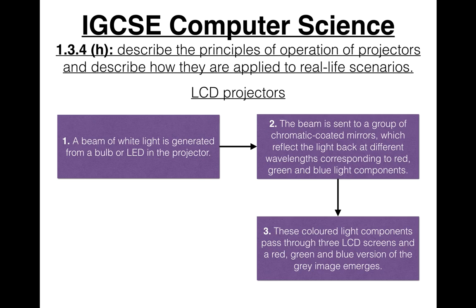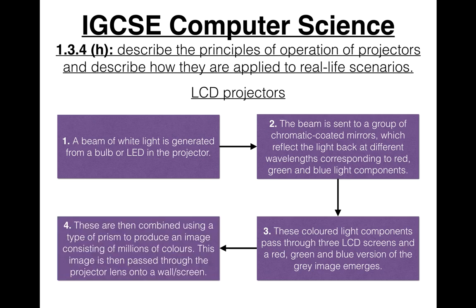A red, green, and blue version of the grey image emerges, and these are combined using a type of prism to produce an image consisting of millions of colours. This image is then passed through the projector lens onto a wall, screen, or interactive whiteboard. LCDs are a little older than DLPs, and instead of mirrors that turn on and off, they use mirrors which reflect light back at different wavelengths.